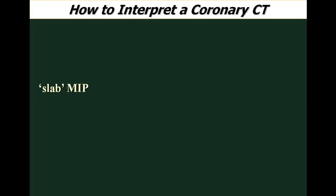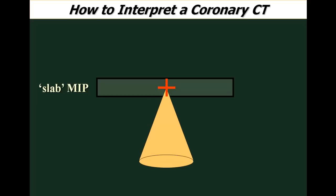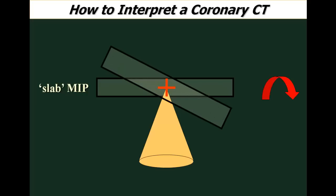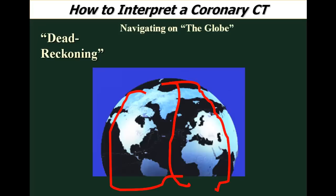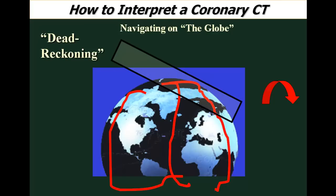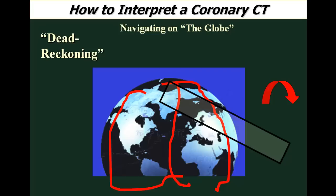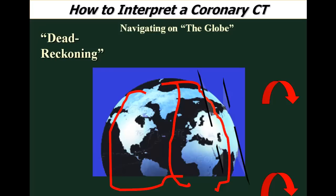We start with a slab maximum intensity projection, which acts as a fulcrum. We prefer to start with a 3 to 5 millimeter thick maximum intensity projection, then rotate to get other views as we navigate the globe. If I have a slab covering only one area, I can see the left main and proximal LAD but not the mid-LAD. Rotating that slab slightly, I start visualizing portions of the mid-LAD. I can reposition and rotate again to view the rest of the LAD — this is how we vessel-walk or dead-reckon down the vessels, examining branches and other characteristics.